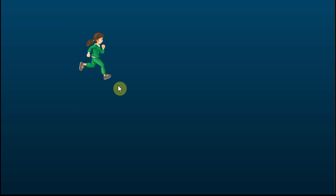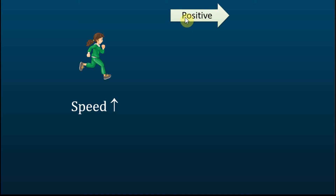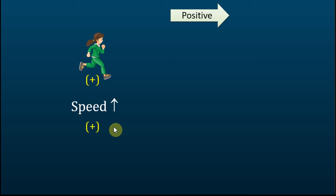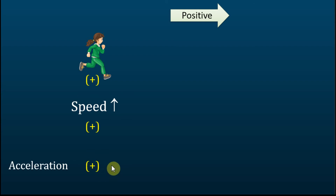Let's say we have a girl running to the right, and we take the direction to the right as the positive direction. She is running with an increasing speed. In this case, the direction of motion is positive and the rate of speed change is positive. Therefore, we say the acceleration is positive. This is the most common type of acceleration.